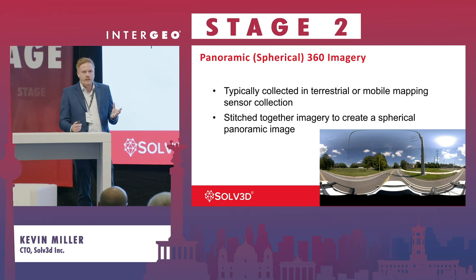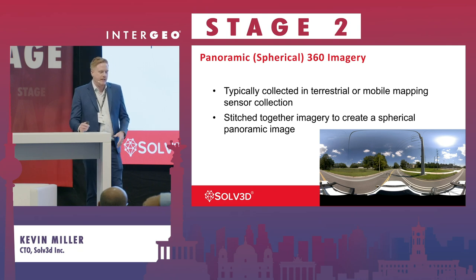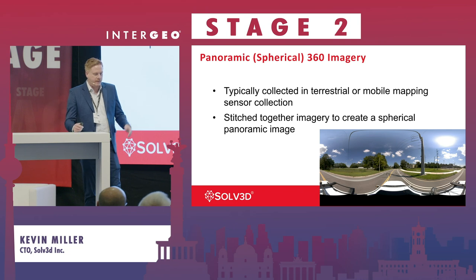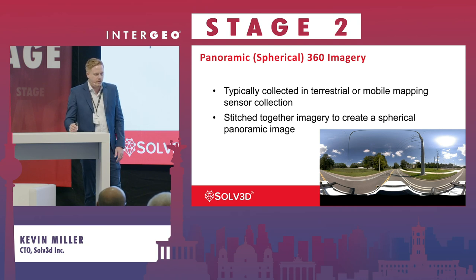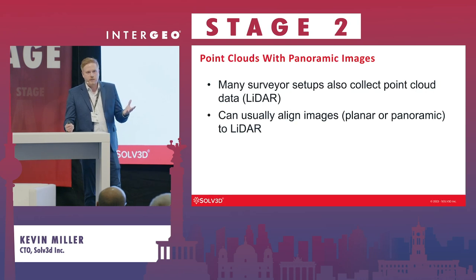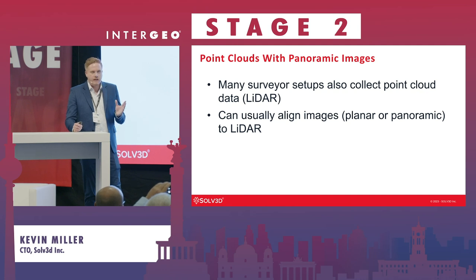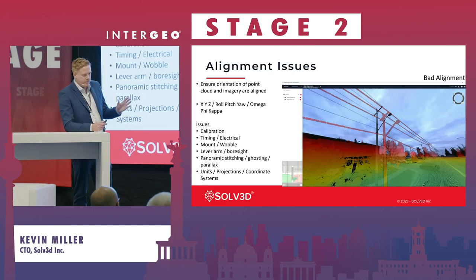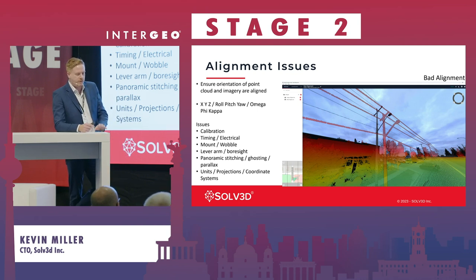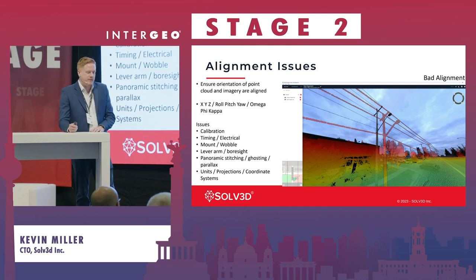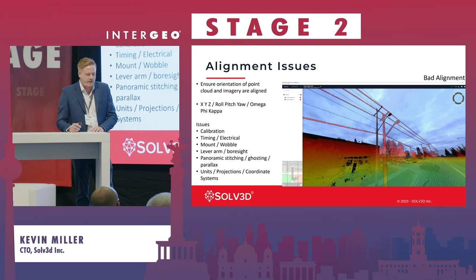When combining imagery with point clouds, we need to be concerned about the alignment of those datasets. Panoramic images are typically collected from integrated systems — like a Mosaic camera or a Trimble system — alongside point cloud data. However, alignment issues can occur depending on the system used. As you can see here, the power pole is offset between the imagery and the point cloud. This can happen due to calibration issues, timing errors, wobble, or different stitching issues on your panoramic.